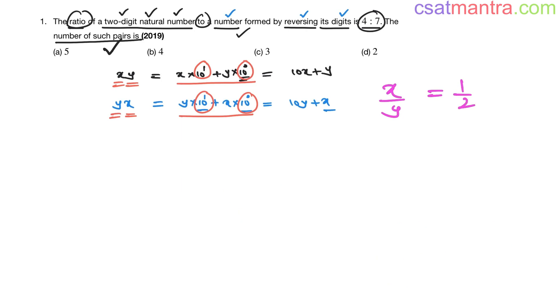Now, we want number of such pairs. From this statement, from this sentence, we got this condition. Now we want x and y which satisfy this condition. Now x and y cannot be greater than 9 my friends. If they are greater than 9, then this number cannot be a 2-digit natural number. It will be 3 digit or 4 digits. So x and y should be less than or equal to 9. They cannot be greater than 9.